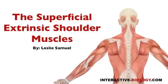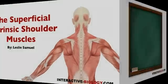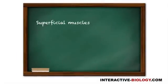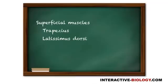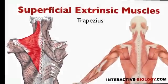Hello and welcome to another episode of Interactive Biology TV, where we're making biology fun. My name is Leslie Samuel, and in this video I'm going to be talking about the superficial extrinsic shoulder muscles — trapezius and latissimus dorsi. We're going to look at the origins, the insertions, and the actions. So let's get right into it.